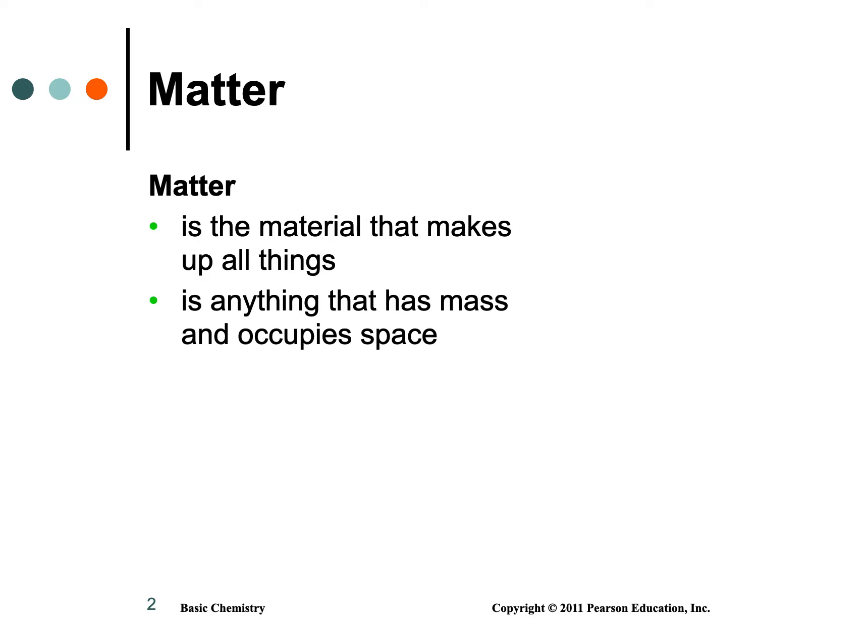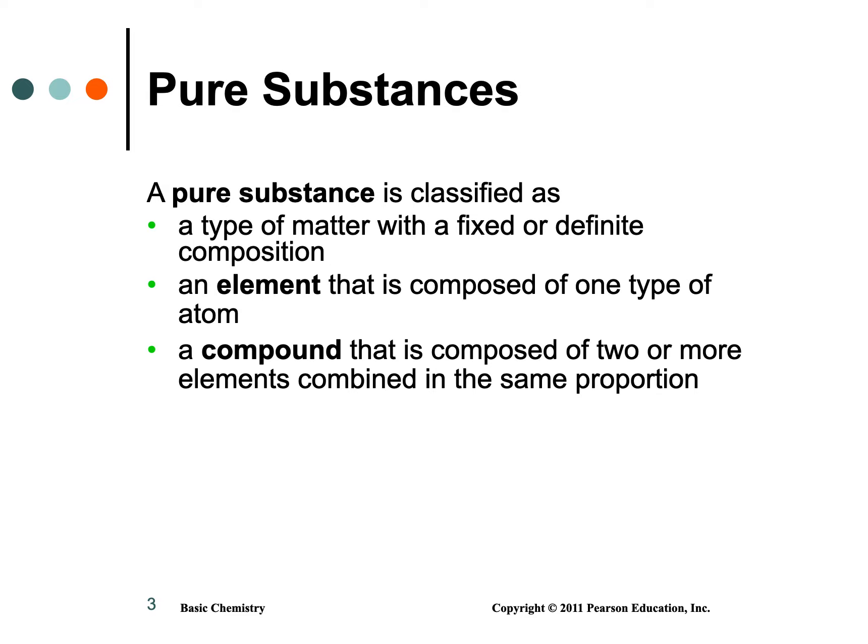When you describe matter, you're describing its properties — what does it look like, what does it do. You can have physical properties such as it's yellow or it's shiny. You can have chemical properties like it blows up when you put it in water, or it reacts with this or that, or doesn't react at all. Those are properties of matter.